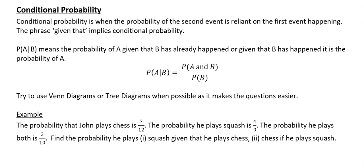In this video we are going to look at conditional probability. Conditional probability is when the probability of the second event is reliant on the first event happening. The phrase 'given that' implies conditional probability.